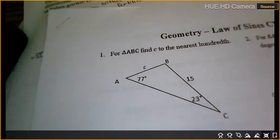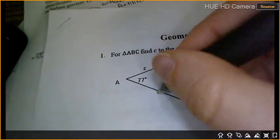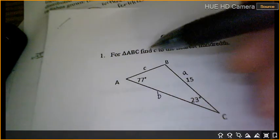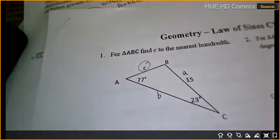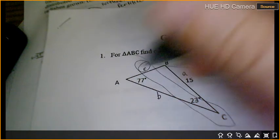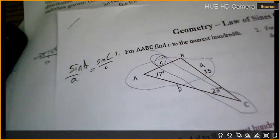Okay. So we're right here for number one. First thing I'm going to do, I'm going to look at my steps. I'm going to label them. So I've got little a, little b, little c. And I'm looking for, it says, find c. So which other one has an angle and a side besides c? A. So I'm going to go sine a over little a equals sine c over little c.